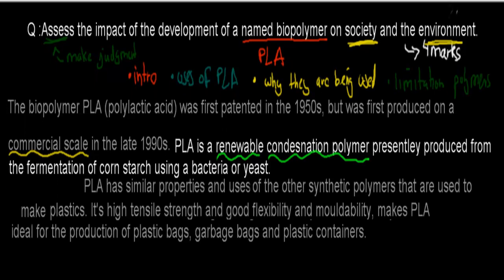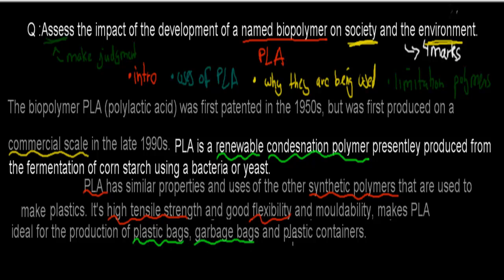Now talking about the uses of PLA: PLA has similar properties and uses to other synthetic polymers used to make plastics. Its high tensile strength and good flexibility and moldability make PLA ideal for the production of plastic bags, garbage bags, and plastic containers. Here we've compared PLA, the biopolymer, to synthetic polymers such as high density polyethylene and low density polyethylene. The properties and uses are similar, which means we could theoretically replace synthetic polymers with PLA.